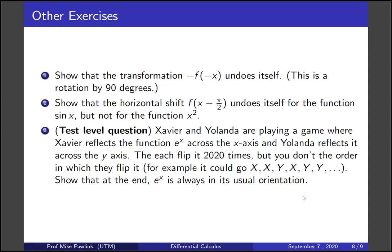And here's a test level question. Xavier and Yolanda are playing a game where Xavier reflects the function e^x across the x-axis and Yolanda reflects it across the y-axis. They each flip it 2020 times, but you don't know the order in which they flip it. For example, Xavier could take two turns, then Yolanda, then Xavier, then Yolanda goes twice—but they each take 2020 turns. Show that at the end, no matter what order they went in, e^x is always in its usual orientation.